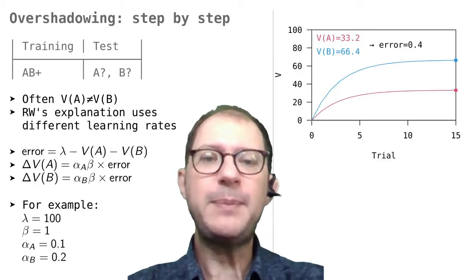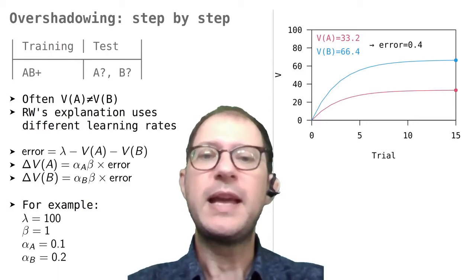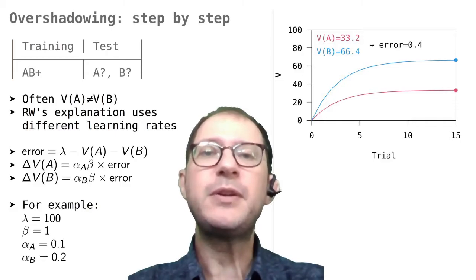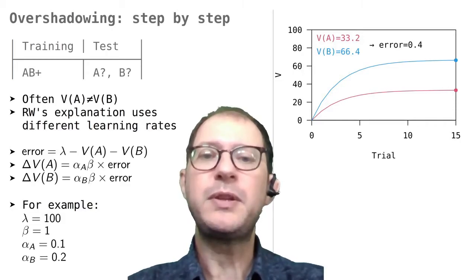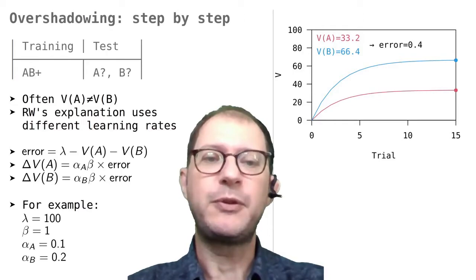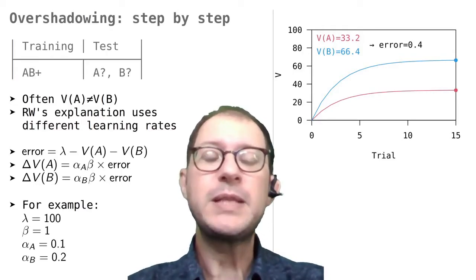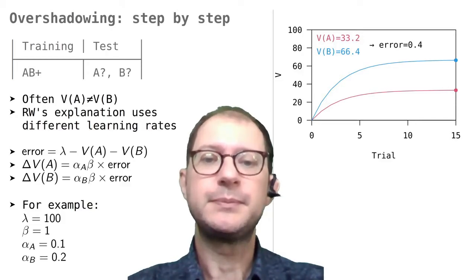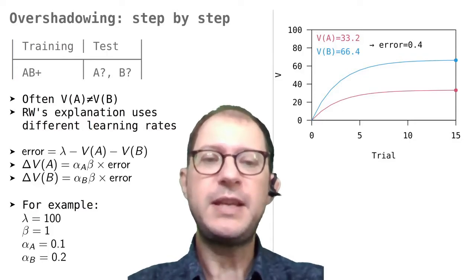If we continue with many updates, we see that the error is gradually eaten up, so to speak, and after enough updates, very little error remains. For example, after 15 updates, we get that V(A) is up to 33.2, and V(B) is up to 66.4, so that the error at this point is only 0.4, and remember that we started with 100.